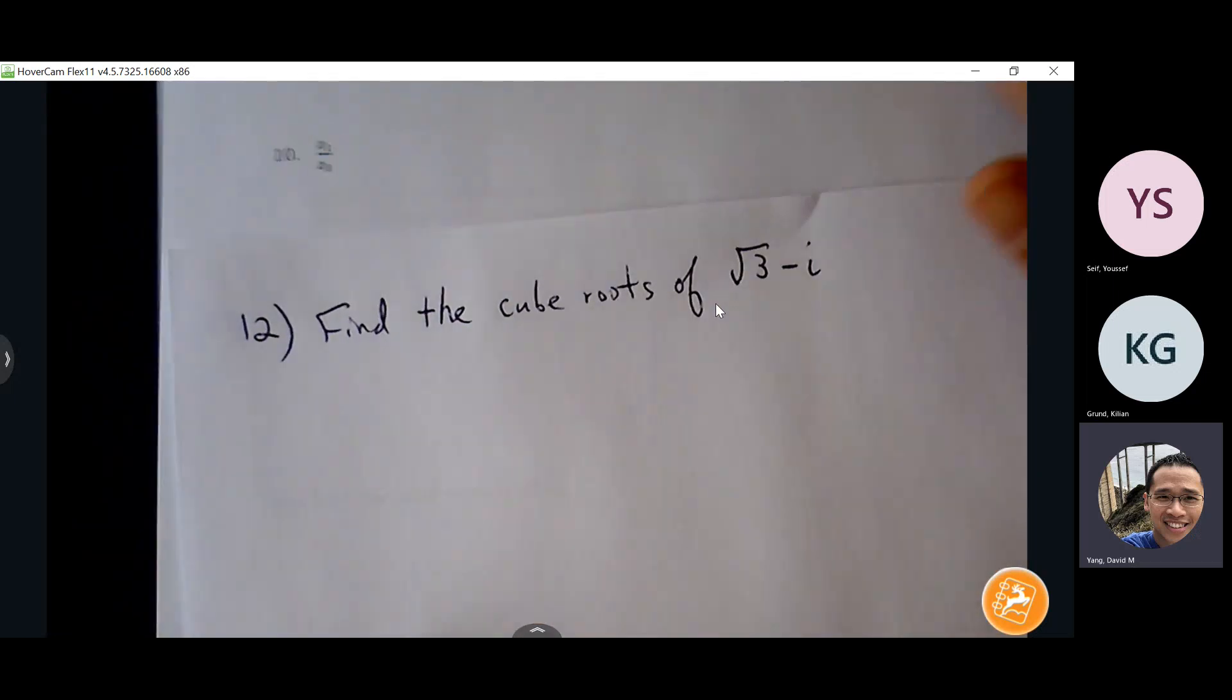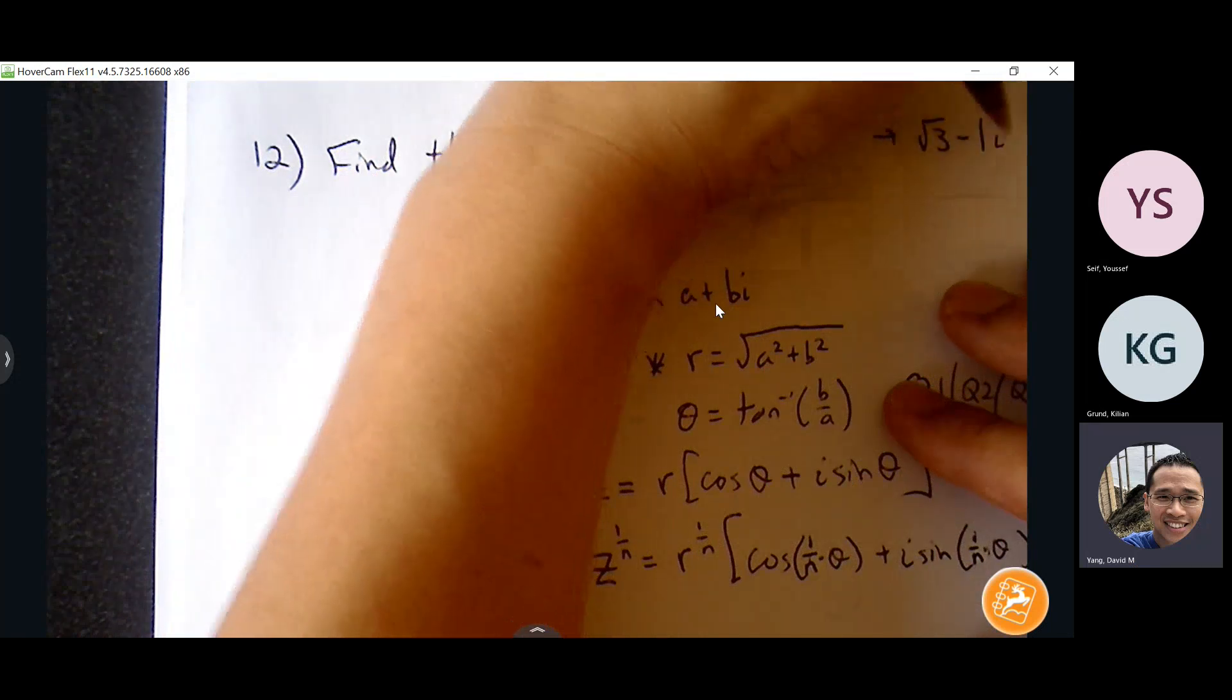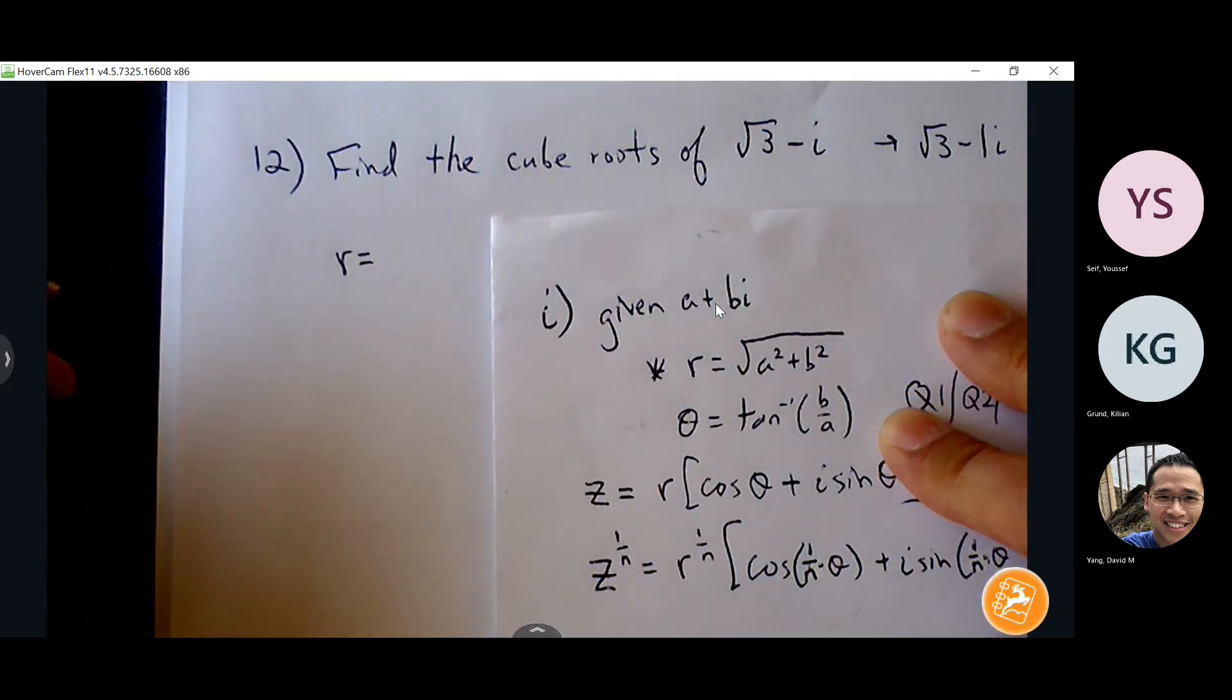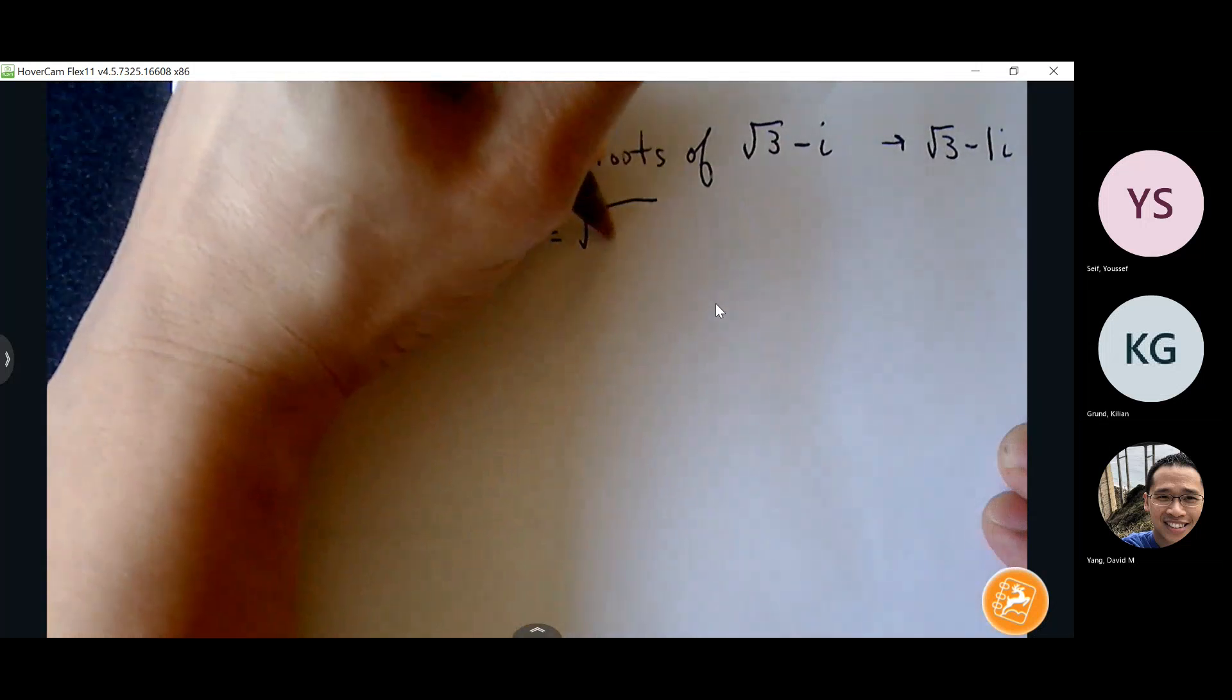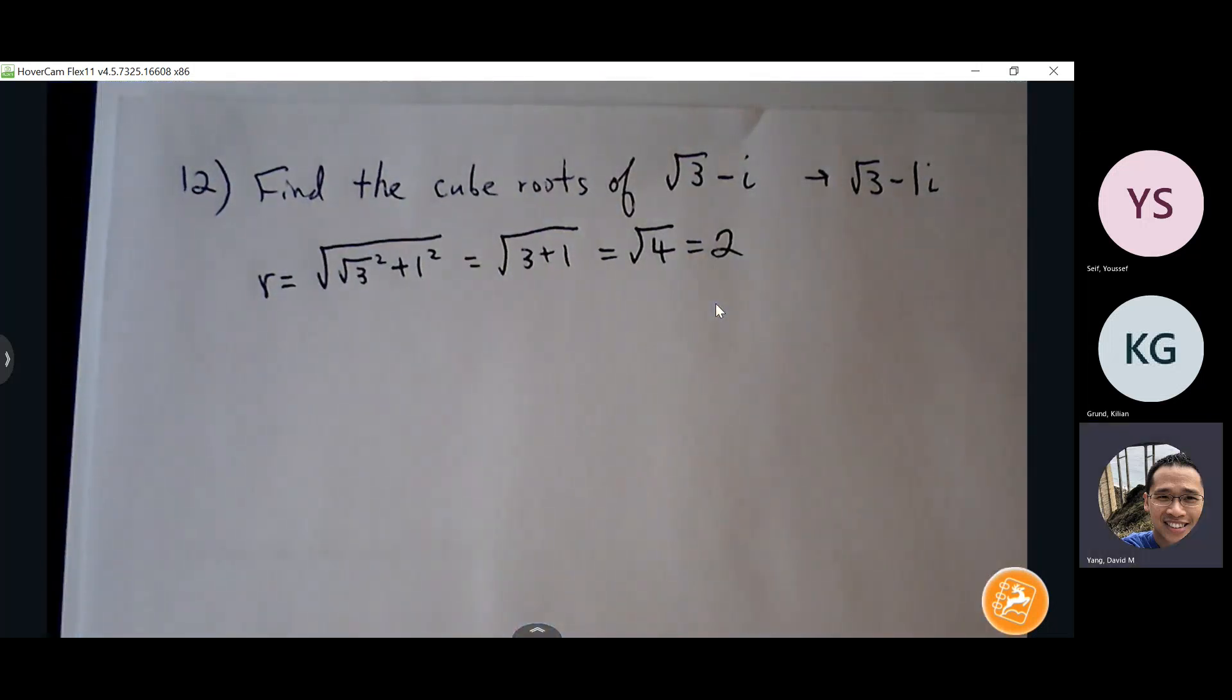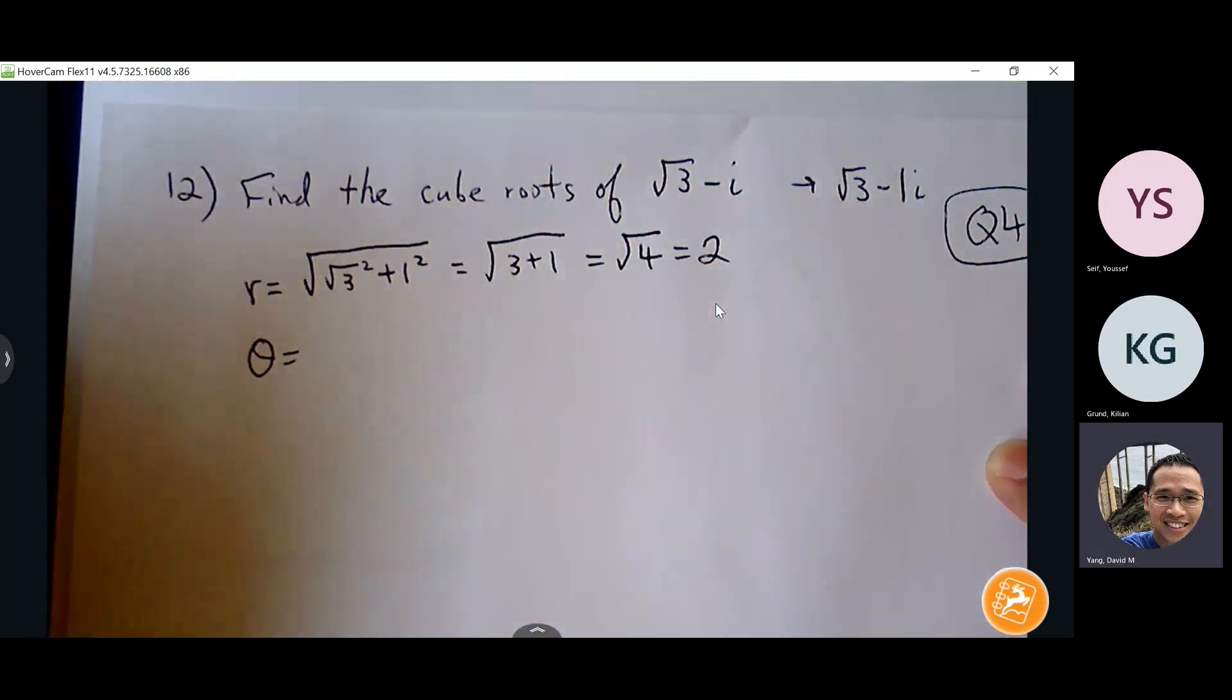Find the cube roots of root 3 minus i. Okay, so first thing, if I'm at radius, the root 3 minus i is same thing as root 3 minus 1i. So radius is just square root of a squared plus b squared. Right, root 3 minus i, if I think about this, or if I just go to the right one and down one, I know I'm in quadrant 4. So when I find my theta, I just have to make sure I'm living in quadrant 4.